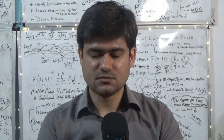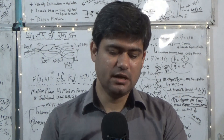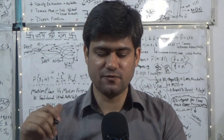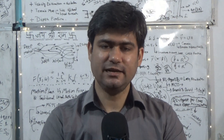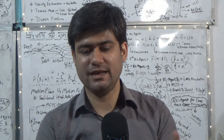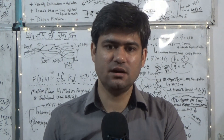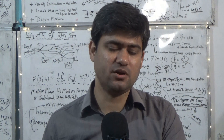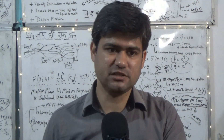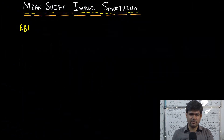With a truncated kernel of fixed window size, we consider only the pixels within the window for computing the mean shift vector at each pixel location. It is typically suggested to perform the mean shift blurring in the LUV or LAB color space as opposed to the RGB color space. Once smoothing is done in the LAB or LUV space, we convert the results back to the RGB space. The first step of the procedure is to convert the RGB image to the LAB or LUV color space.